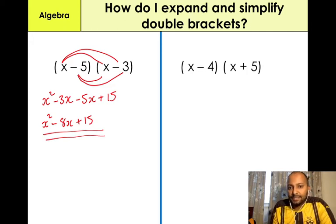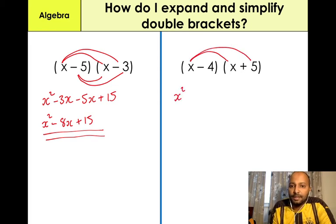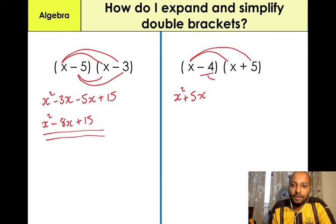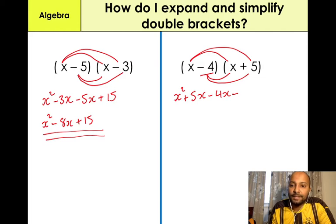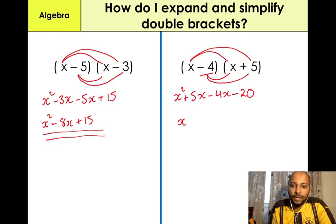Another example: (x − 4)(x + 5). First: X times X — X squared. Outer: X times 5, which is 5X. Inner: minus 4 times X, which is minus 4X. Last: minus 4 times 5, which gives us negative 20. Simplifying: 5X minus 4X gives us positive 1X. So our answer is X squared plus X minus 20.